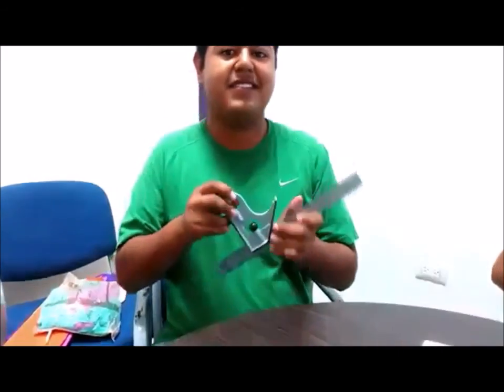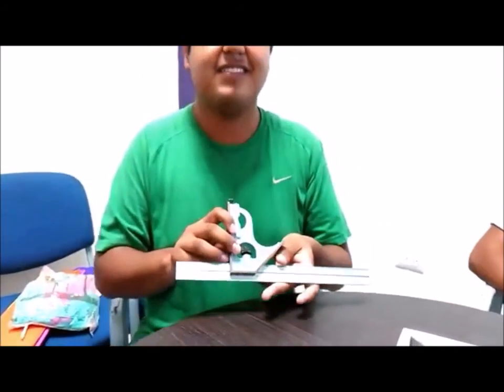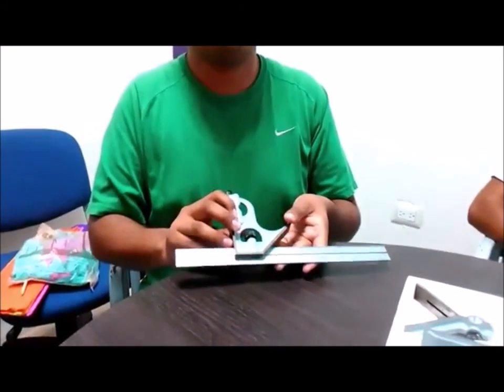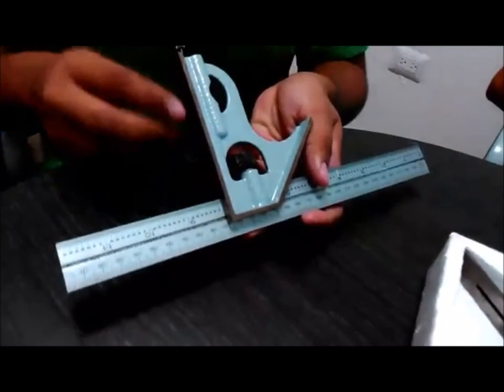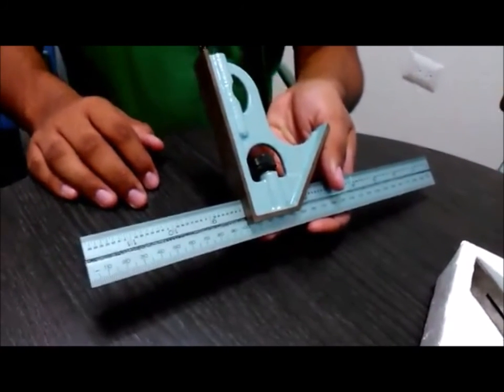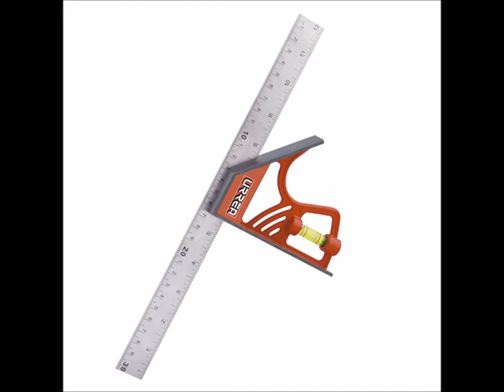2. Colocar la superficie plana del cabezal de escuadra encima del orificio. Aflojar el tornillo y bajar la regla hasta que toque la parte inferior. 3. Apretar tornillo de fijación, girar y leer la profundidad.